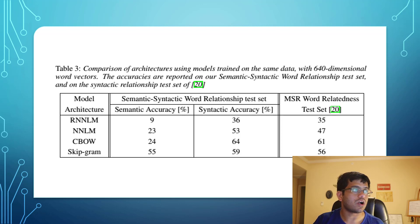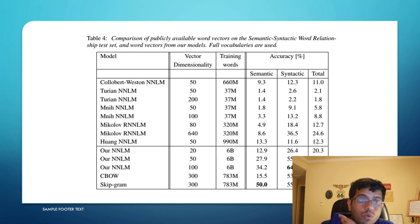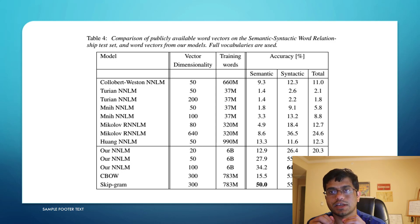Next, they talk about comparison of architectures using models trained on the same data, and all the different models we talked about. They also discuss comparison of publicly available word vectors and how they performed. In general, if you want to know, I personally prefer skip-gram over all other model sets. I found them much better in implementation.